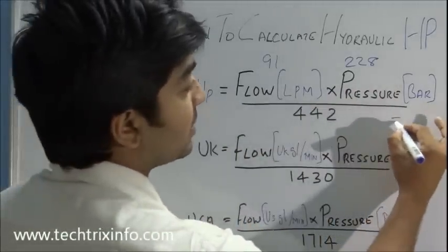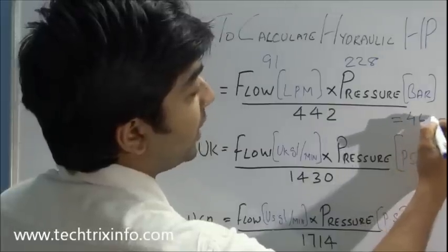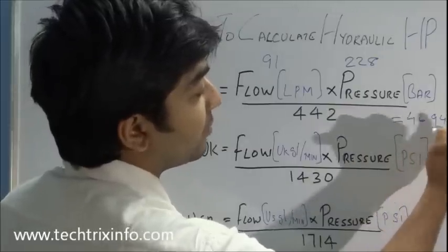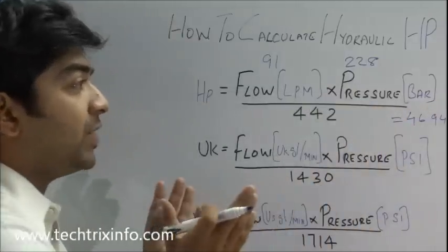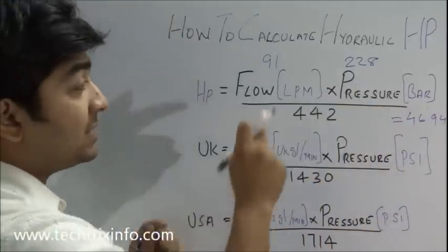So this is our hydraulic HP of a hydraulic system which has a flow of 91 LPM and a pressure of 228 bar needs 46.94 HP.